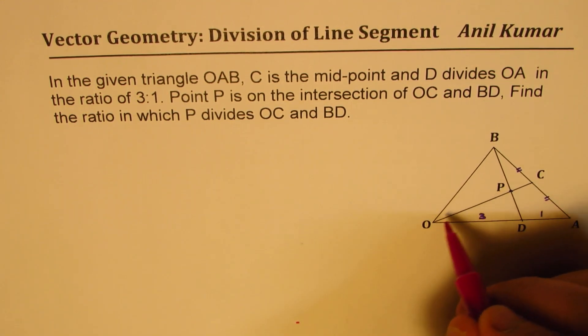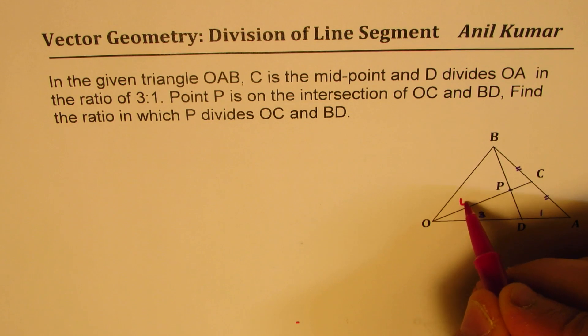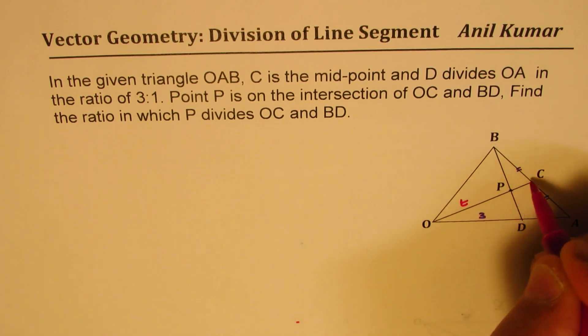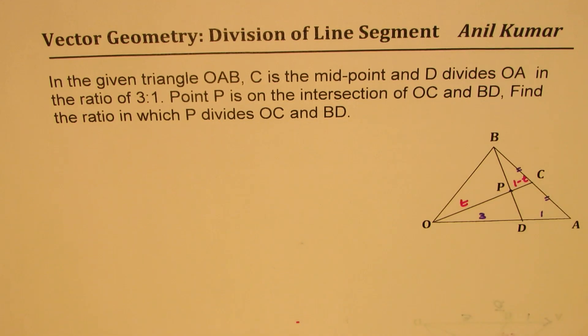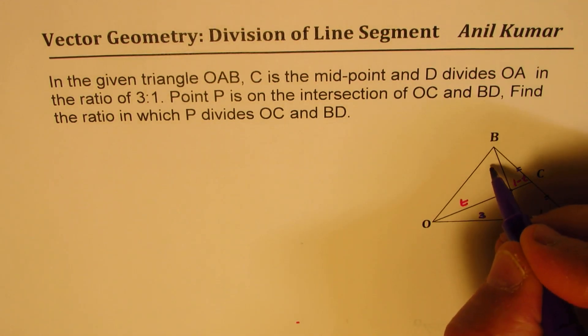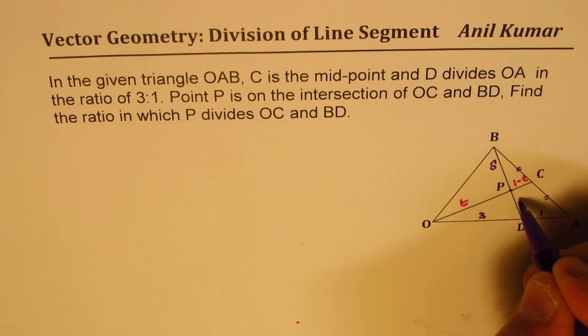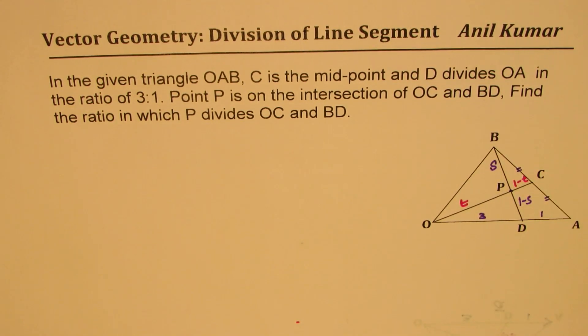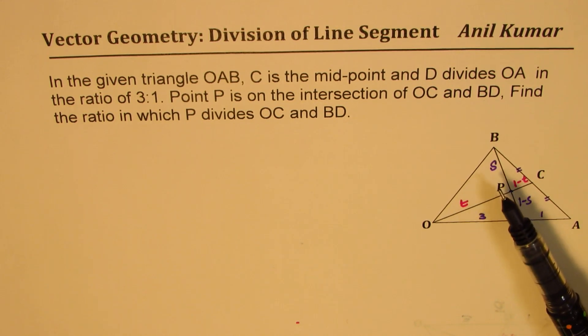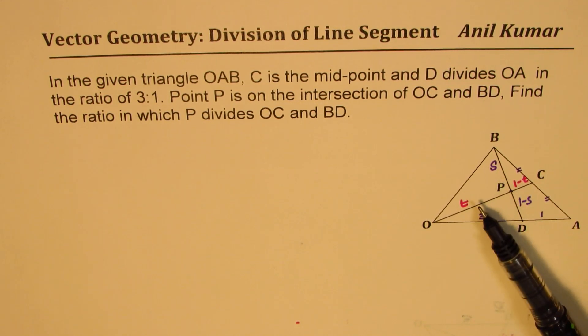Let's say this ratio BD is then we are taking this as 1 minus D. The whole is 1 and on this side let us take this as S and then this becomes 1 minus S. So, the ratio in which P is dividing BD. Now, the idea here is to write OP in two different ways involving both the parameters and then we will isolate them and figure them out.